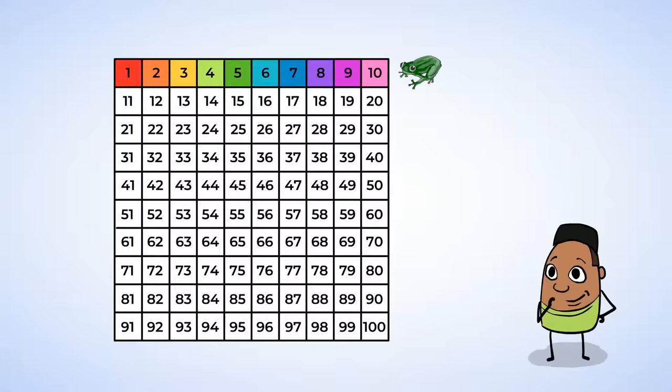Now, you've probably counted to 10 before, but do you remember what comes next? That's right. The next row starts with 11. Then 12, 13, 14, 15, 16, 17, 18, 19, 20.